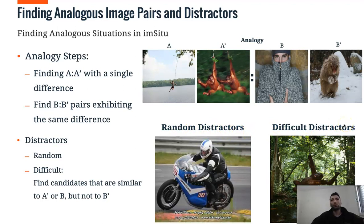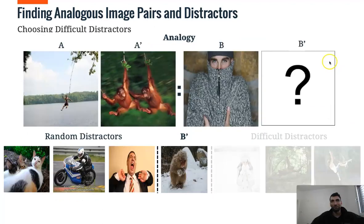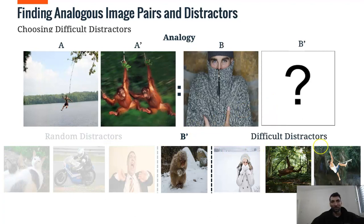To select difficult distractors, we search for things that might be confusing, like similar to A, A prime, B, but not to B prime. And here we can see that it would be much easier to solve the example using random distractors, rather than difficult distractors.